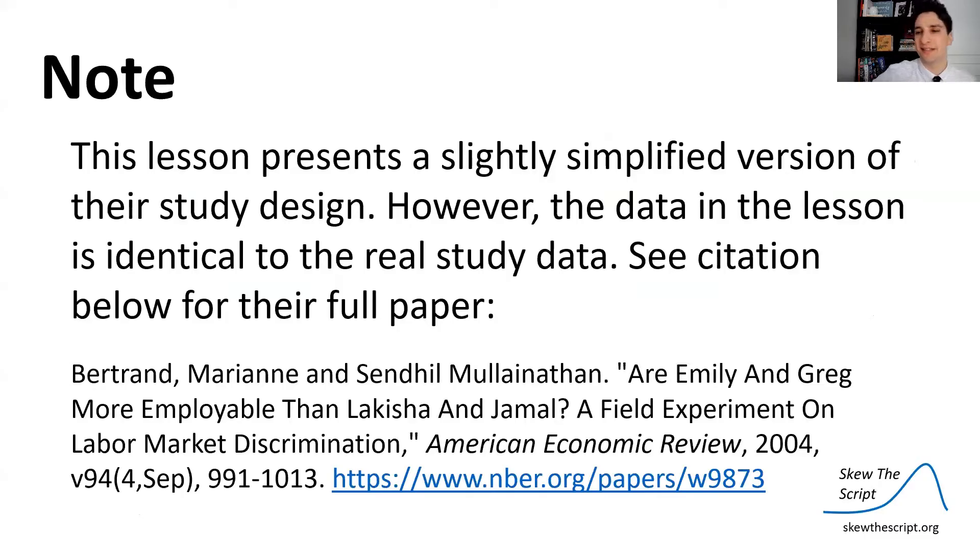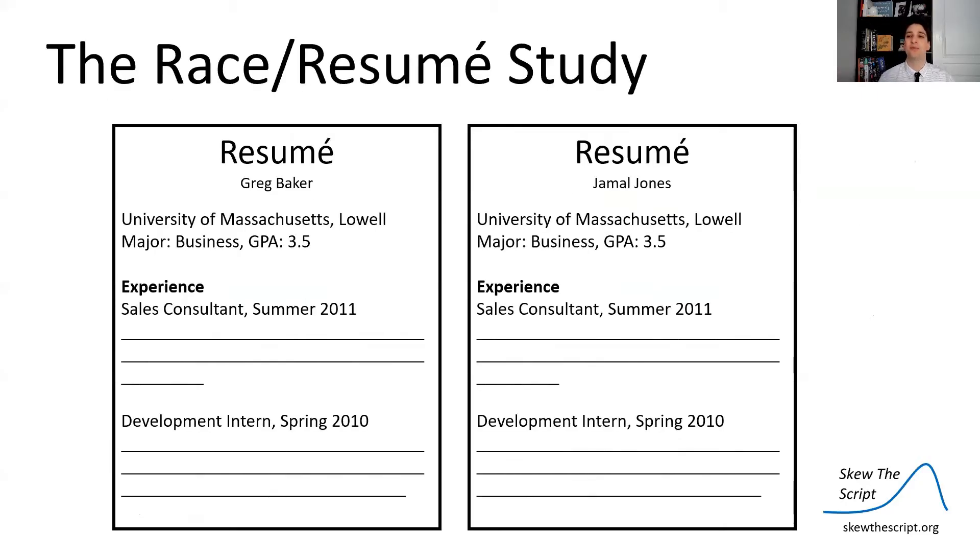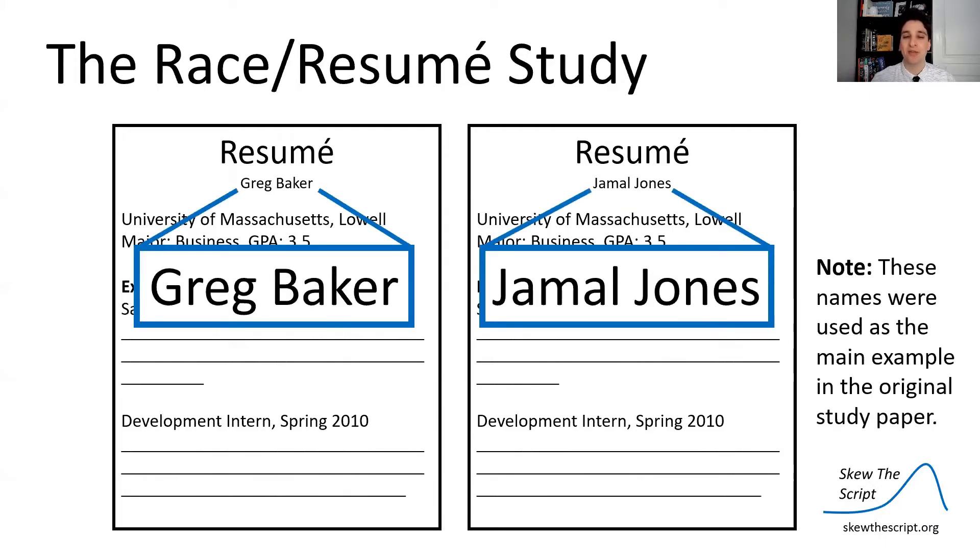Note that this lesson is going to present a slightly simplified version of their experimental design. If you want to see the full version, you can go to it via the citation link here. What they did was they made identical resumes and they sent it out to employers. The only thing they changed on these resumes was the name. They used names commonly associated with white people and names commonly associated with black people. They saw was there a difference in the rates of callbacks they got, even though the resumes were otherwise identical.